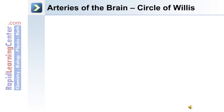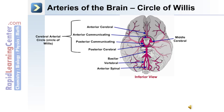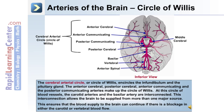The brain has a unique vascular structure known as the circle of Willis, or the cerebral arterial circle. This is depicted in this inferior view of the brain vessels. The cerebral arterial circle is made up of the anterior cerebral artery, the anterior communicating, the posterior communicating, and the posterior cerebral. This encircles the infundibulum and the pituitary gland.